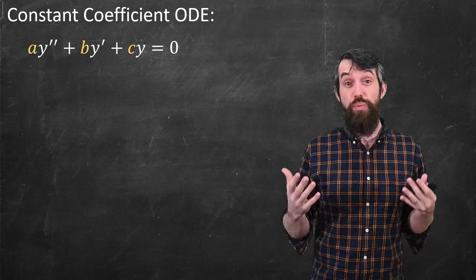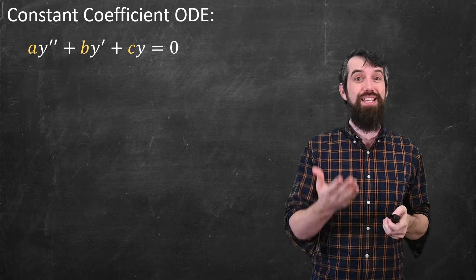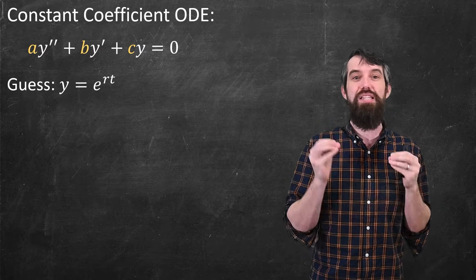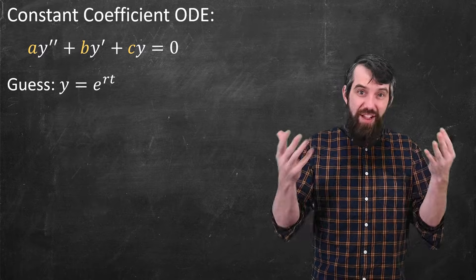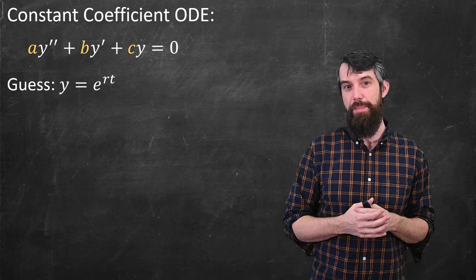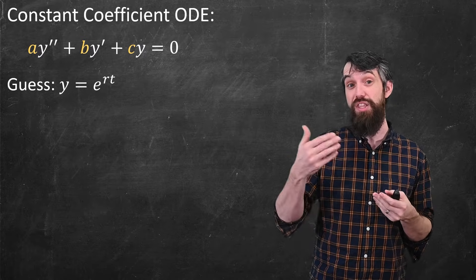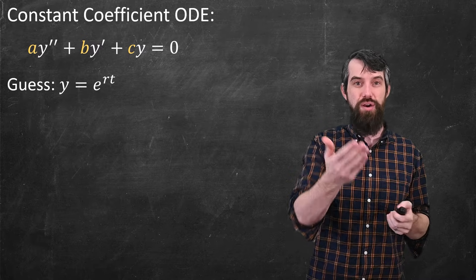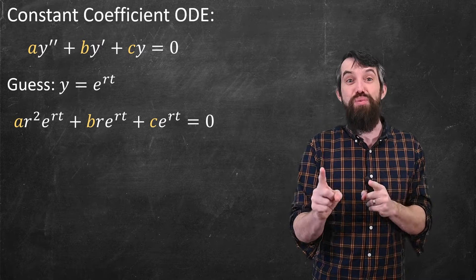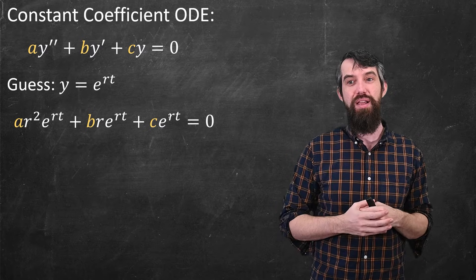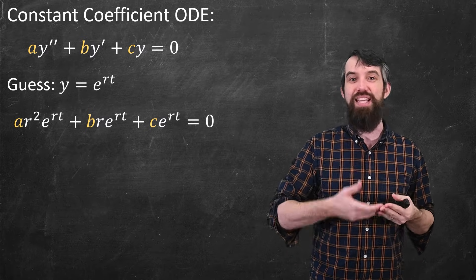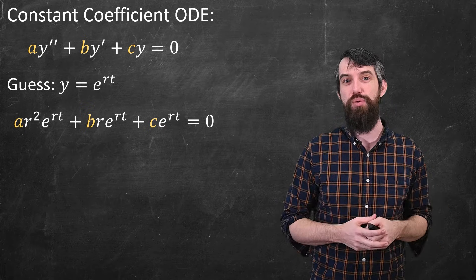The approach we took previously, and we'll do it again here, is to guess a solution of the form e to the rt. It's just a guess. We'll see whether it works. If I do this, then I can substitute it in. Two derivatives of e to the rt is r squared times e to the rt with constant a out front. One derivative of e to the rt is r times e to the rt with constant b out front. And cy becomes c e to the rt, and all that adds up to zero.